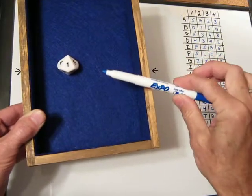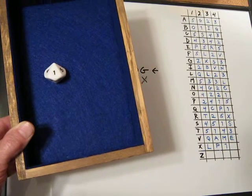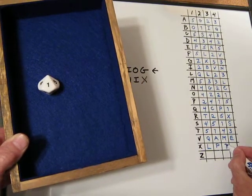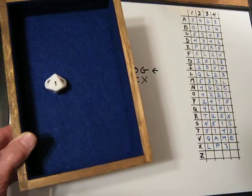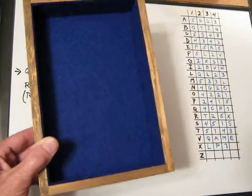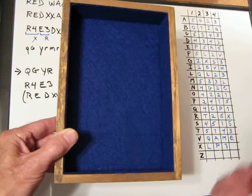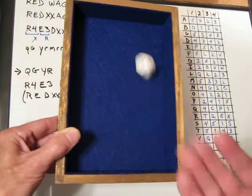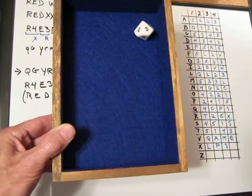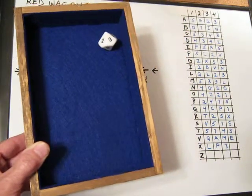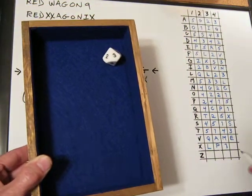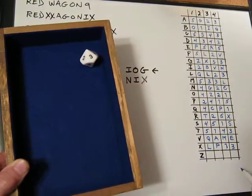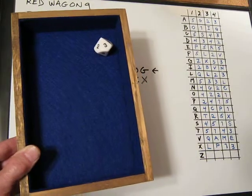These dry-erase pens really tend to dry out if you leave the cap off for a while — something to watch out for. By doing this, we get a very random chart, which is what we have here. I still have to do the 0, but you get an idea of what I'm doing.